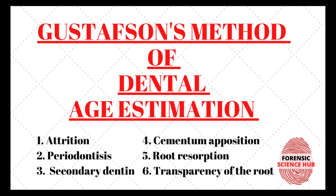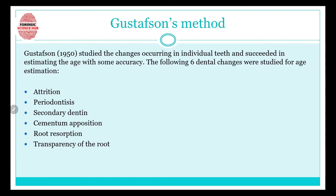Welcome back to the channel. In today's video, I'm going to be discussing a method called Gustafson's method, which is a method for calculating the dental age of a person on the basis of six criteria: attrition, periodontosis, secondary dentine, cementum apposition, root resorption, and transparency of the root. Gustafson studied the changes occurring in individual teeth and succeeded in estimating age with some accuracy.